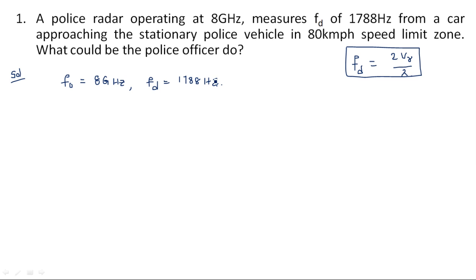This Doppler frequency is from a car approaching the stationary police vehicle in an 80 kilometers per hour speed limit zone. In order to take any action on the driver, the police officer first has to know the relative speed at which the car is moving. If the car is moving beyond the speed limit, he has to impose a fine; otherwise he can let the driver go.